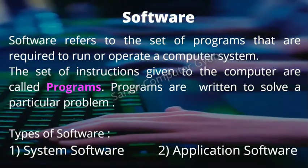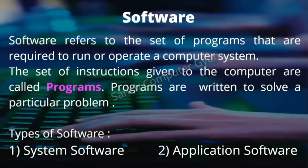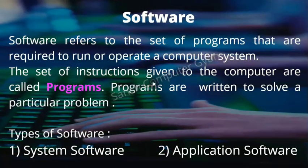We can write different programs and combine all of them to create a particular software — like Notepad. If we want to type text, we use Notepad, which is our software. There are two types of software: the first is system software and the second is application software.